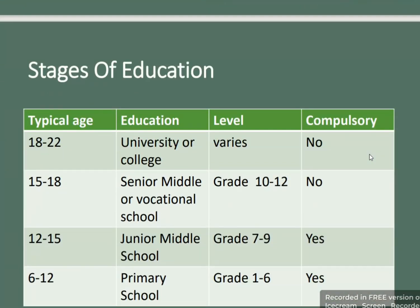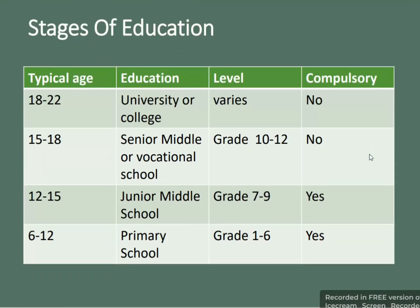The stages of education are: ages 6 to 12 for primary education, grades 1 to 6, which is compulsory. Ages 12 to 15 for junior middle school, grades 7 to 9, also compulsory. Ages 15 to 18 for senior middle or vocational school, grades 10 to 12, which is not compulsory. Typical age of 18 to 22 for university or college level, which varies and is not compulsory.